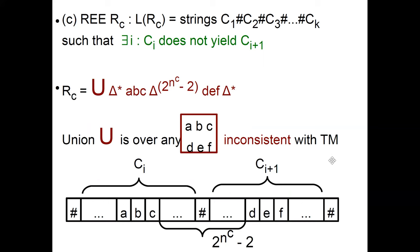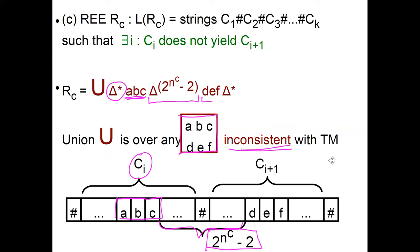RC is a union over all 2×3 window symbol patterns inconsistent with the TM: you put any symbols, then at some point put abc — the symbols abc in configuration CI. Then to move to the next configuration, the number of symbols in between is 2 to the n to the C minus 2. So delta to the 2 to the n to the C minus 2 allows you to jump to the next configuration, then you put def corresponding to configuration CI+1, followed by any symbols.